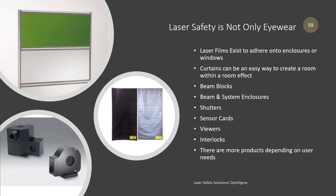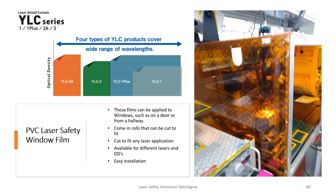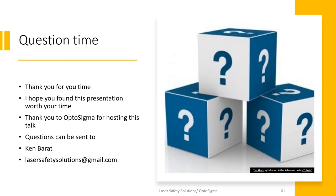Laser safety is not just about laser eyewear. There are films, acrylic panels — which are essentially large sheets of laser eyewear — curtains, beam blocks, shutters, sensor cards, viewers, and interlocks. There are also screens and films you can put on enclosures or windows to provide protection. With that, it is time for questions. If we do not get to your questions today, you will receive an email addressing them. I will now turn everything over to Cindy.